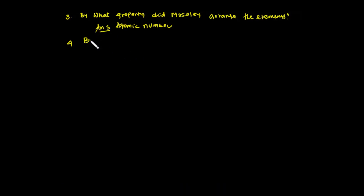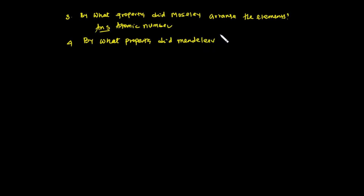Question number 4: By what property did another scientist arrange the elements? The answer is based on their atomic mass.